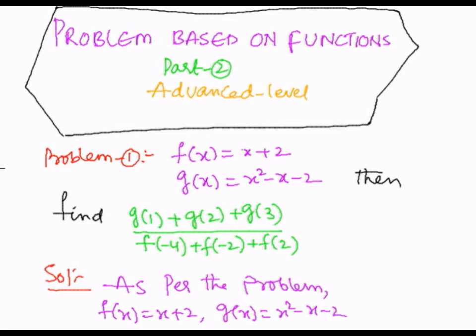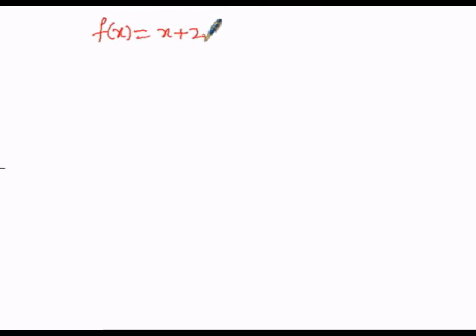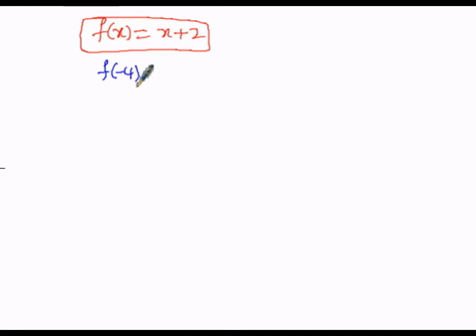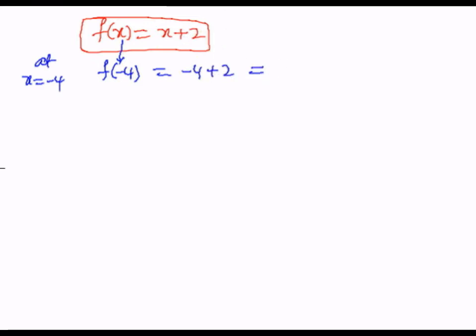Let us find out f(-4), f(-2), and f(2). The function is f(x) equals x plus 2. For f(-4), x is replaced by minus 4, giving minus 4 plus 2. Minus plus is minus; we subtract: 4 minus 2 is 2, and since 4 is greater and negative, we get minus 2. So f(-4) equals minus 2.